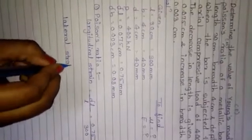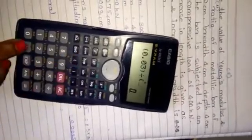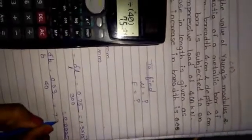So, we got longitudinal strain. Next, lateral strain, which is equal to delta B by B. What is delta B? 0.03. What is B? 40 mm. Now, calculate it. 0.03 divided by 40 mm. Answer is 7.5 × 10⁻⁴, which is equal to 0.00075.